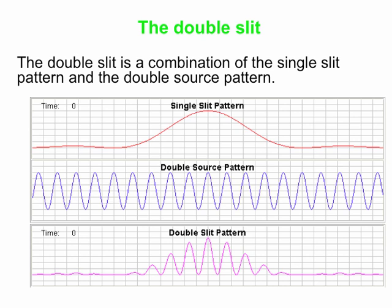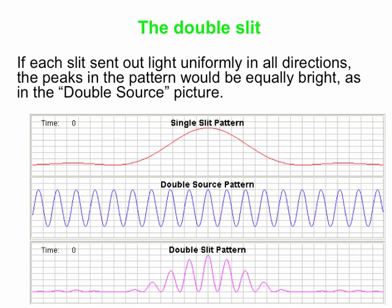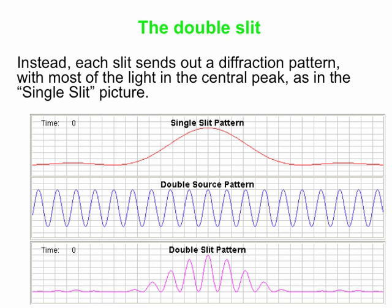So you get these intense dark and bright lines in the middle, and then you get a little bit of stuff toward the edges. But basically, if light's sent out uniformly in all directions, then you expect to see what's shown in the double source picture, that all the peaks are equally bright. But it turns out that each slit does not send out light uniformly in all directions. Each slit instead sends out a diffraction pattern. Most of the light is sent out in the forward direction. And so you get interference between two single slit patterns when you have the double slit, and that results in the pattern at the bottom. It's basically like multiplying the single slit pattern by the double source pattern, and you get the double slit pattern.